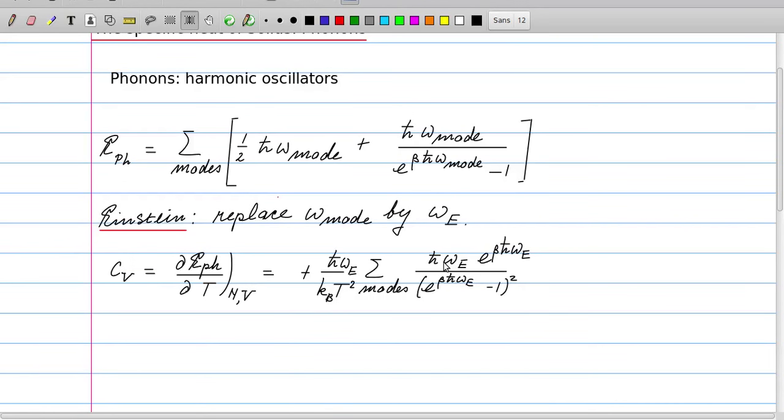The specific heat is the temperature derivative of the phonon energy. The only place where temperature enters the expression for the energy is this beta here. If we take the derivative with respect to the T dependence in beta, we get the following expression.